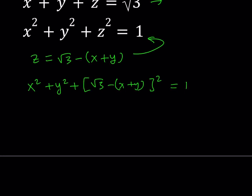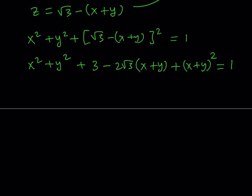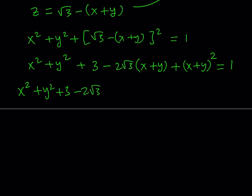Let's go ahead and square this as a difference — it's like an (a minus b) squared. That gives me x squared plus y squared plus 3 minus 2 root 3 times (x plus y) plus (x plus y) squared, and that's equal to 1. Expanding further: x squared plus y squared plus 3 minus 2 root 3 x minus 2 root 3 y plus x squared plus 2xy plus y squared.